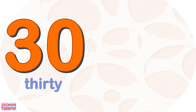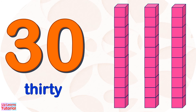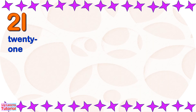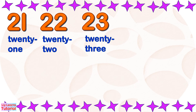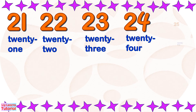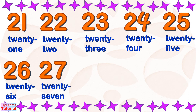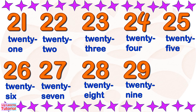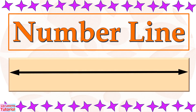30: 10, 20, 30. We'll count one more time: 21, 22, 23, 24, 25, 26, 27, 28, 29, 30. We can also write numbers 21 to 30 on the number line.